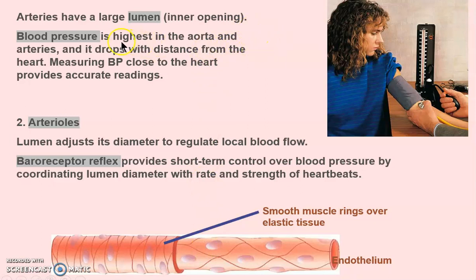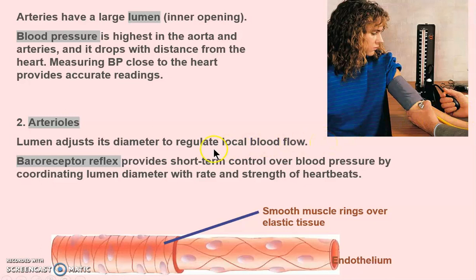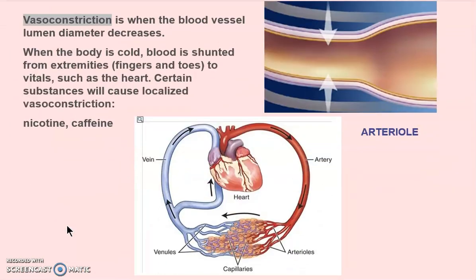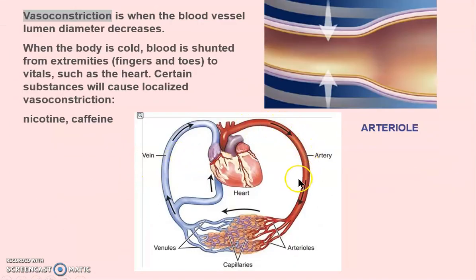Lumen just means the inside of a vessel. We measure blood pressure close to the heart — that's why I don't like measuring at the wrist, though sometimes with an obese patient the cuff won't fit the arm. Baroreceptors provide short-term control over blood pressure. The endothelium is the inner lining. Arterioles are thinner than arteries — we go from artery to arteriole to capillary.